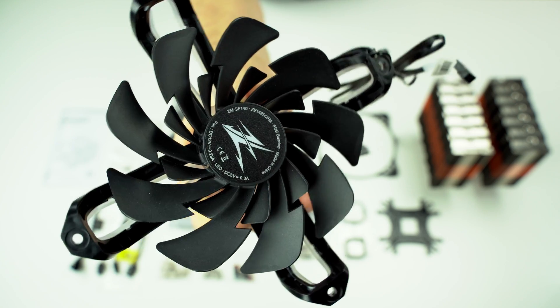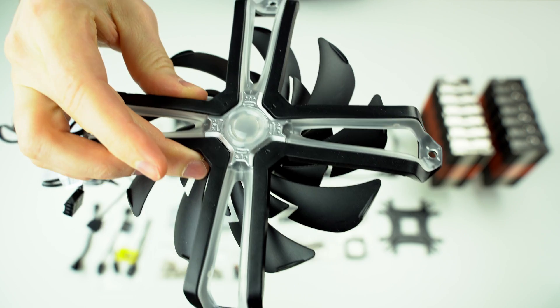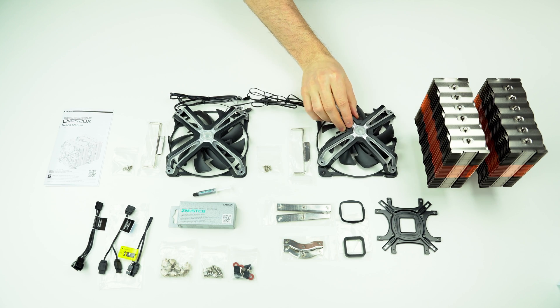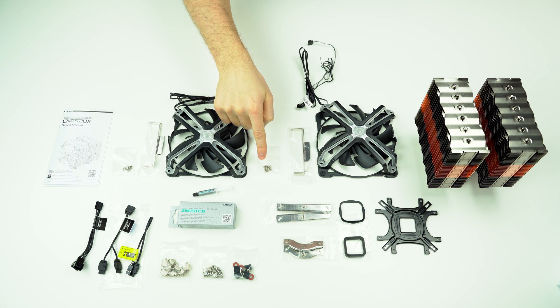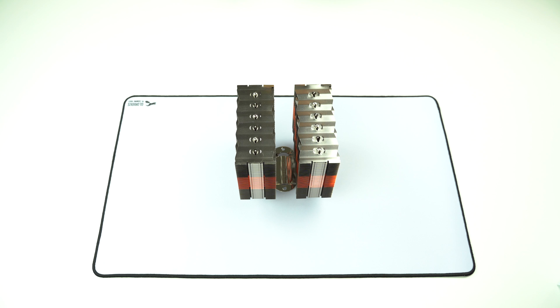And it also has addressable LEDs on the other side. Under it there is this fan guide. And close by are these two fan clips and four fan screws. The same is here. And that's it. Let's have a look at the dimensions of the heatsink. First without any fans.